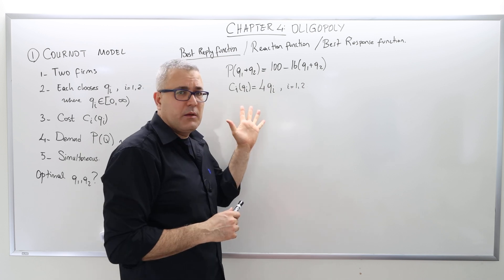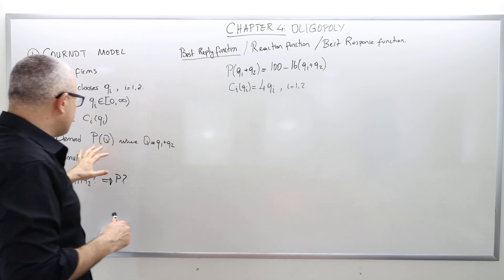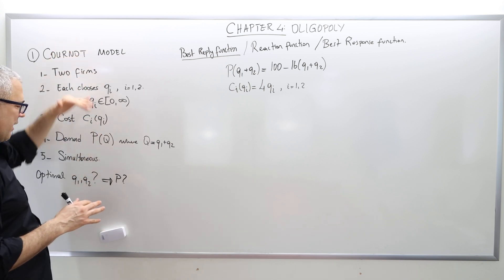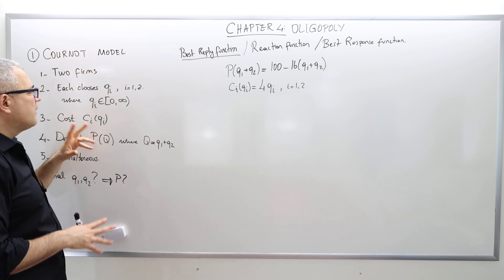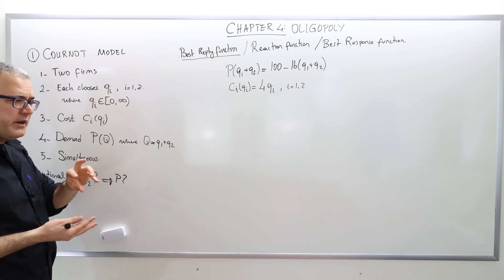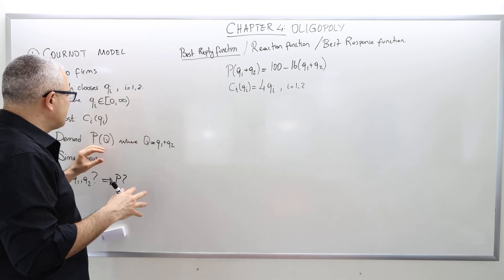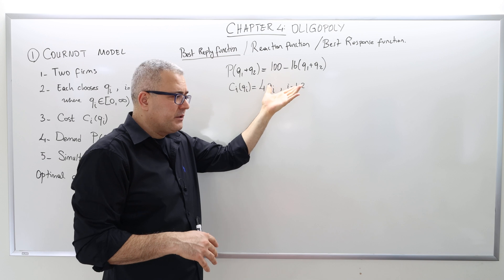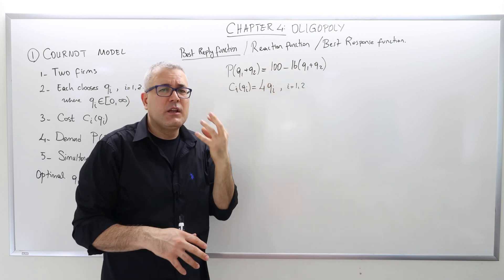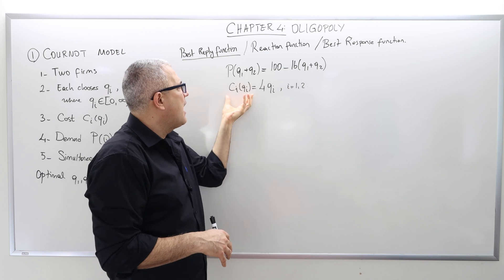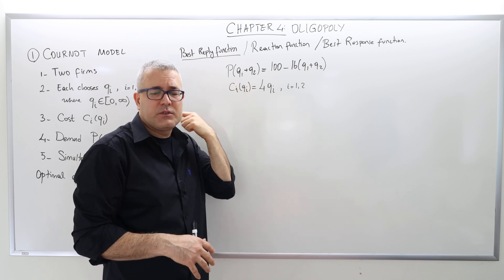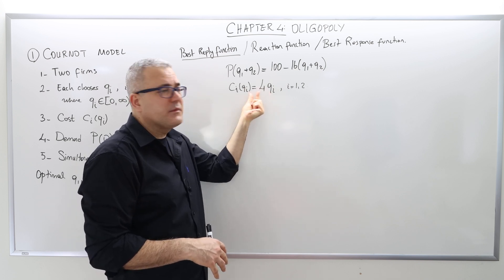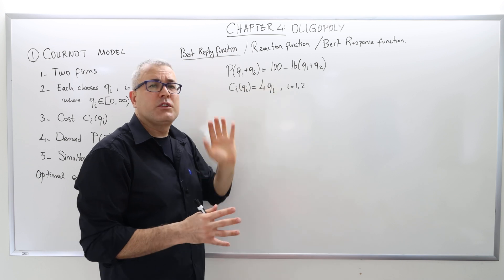Here is a specific numerical example for which I needed the demand curve and the cost functions. The model-specific assumptions still remain; the only numerical example assumptions are the cost function and the demand curve. For that purpose, I assume the inverse demand curve is 100 minus 16 times total quantity (q1 plus q2), and for each firm the symmetric cost function is 4 times quantity, with no fixed cost for simplicity.